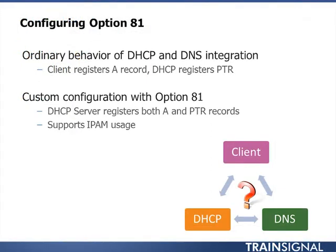Our next important topic is what's referred to as option 81. It's not quite as sophisticated as you might imagine, but it is an important configuration and will become very important as we head into our later sections on the IP Address Management module available for Windows Server 2012. What's important to recognize first and foremost is that there's an important relationship between DHCP and its partner in crime DNS. DNS is the domain name system. We're going to explore it in our next lesson. DNS is there to do name resolution — hey DNS server, here's the name of a computer, what IP address goes with it?